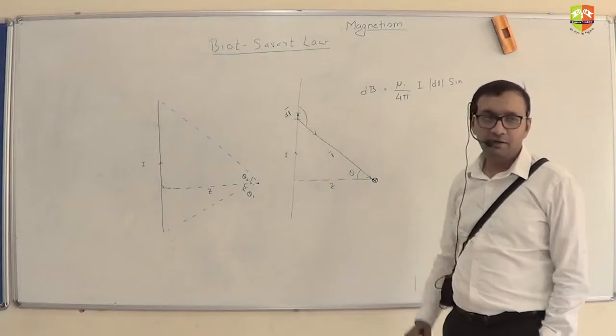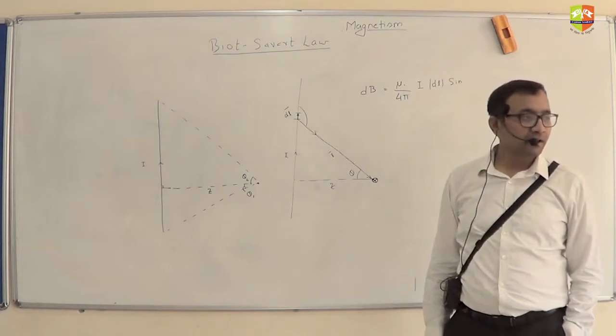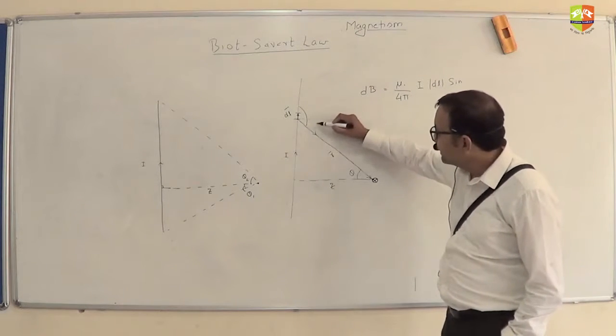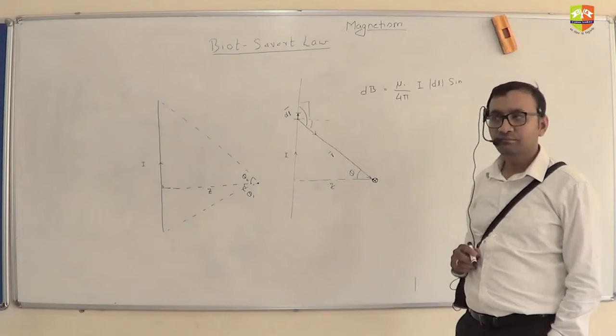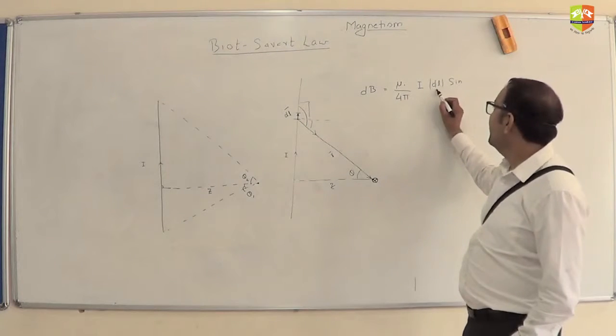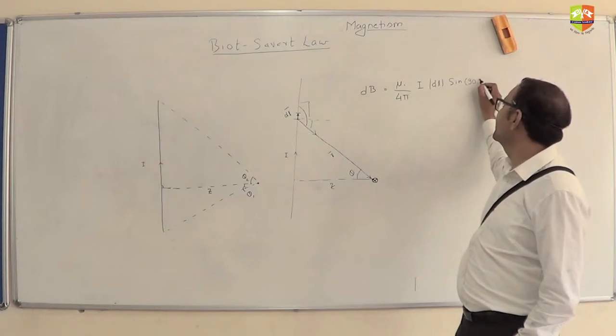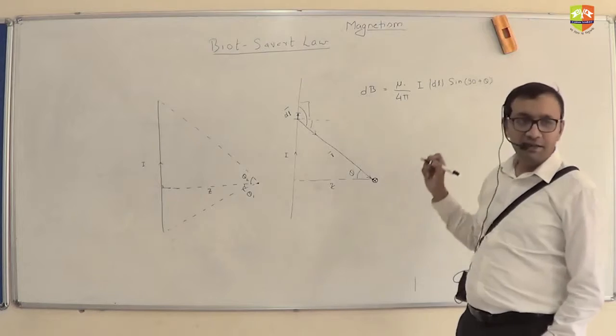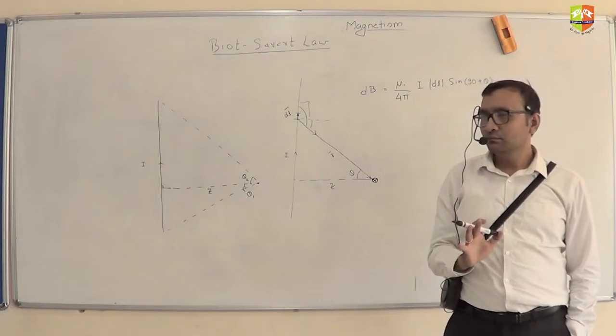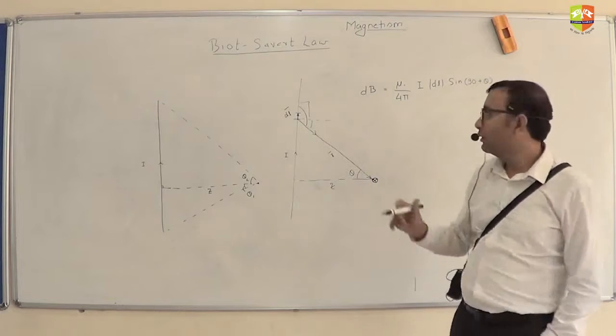Let's say this is theta, how much is that? 90 plus theta. You can draw a line like this, this is theta, this is 90, so 90 plus theta. So dB equals mu0 by 4 pi, I into dl into r into sin of angle between them which is 90 plus theta. That's dl cross r. That's the cross product, understood?